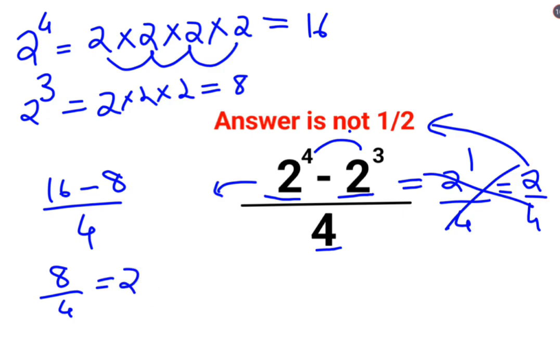Now this was very easy to calculate. We could do it this way. But what if the numbers are very different? 2 raised to 100 minus 2 raised to 92.